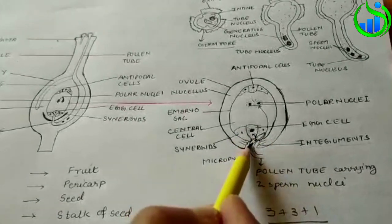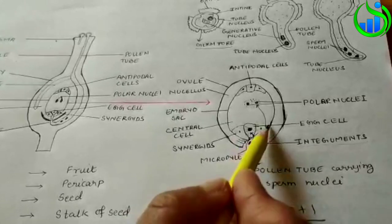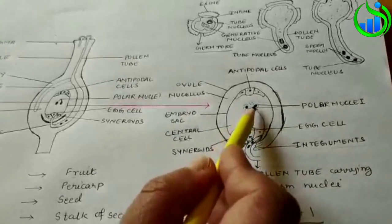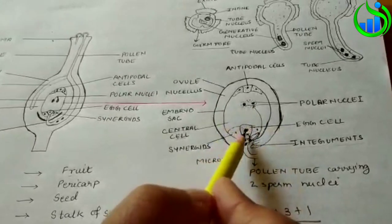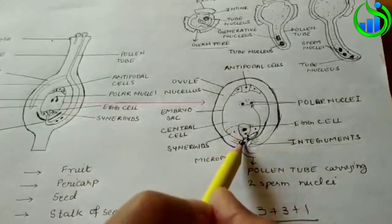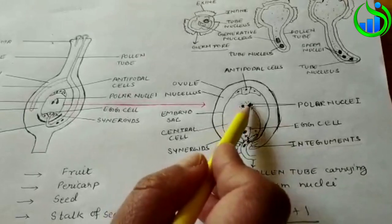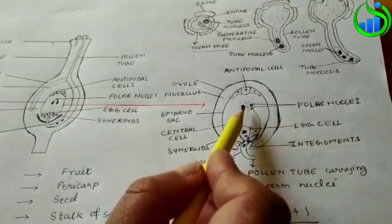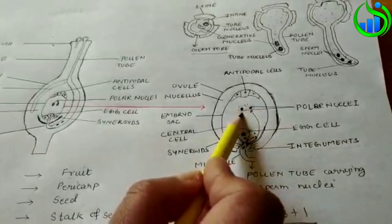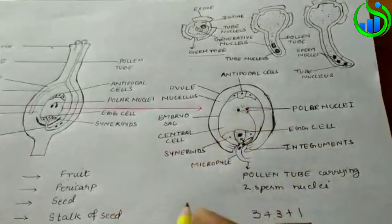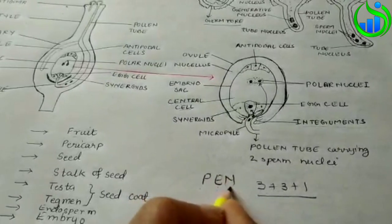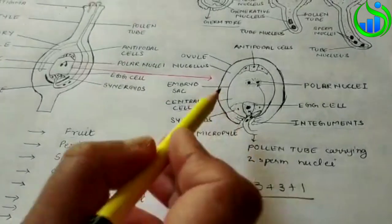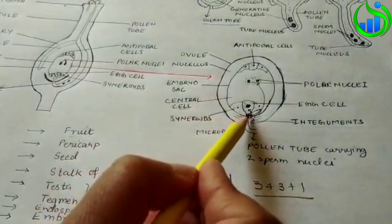There's a type of triple fusion. You can use the male nucleus and the two polar nuclei. This is the primary endosperm nucleus.